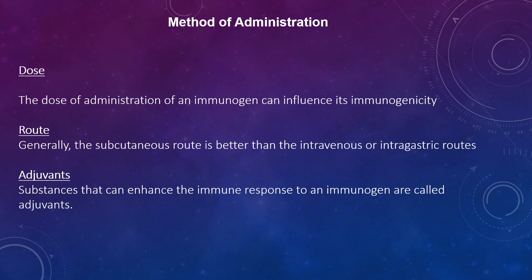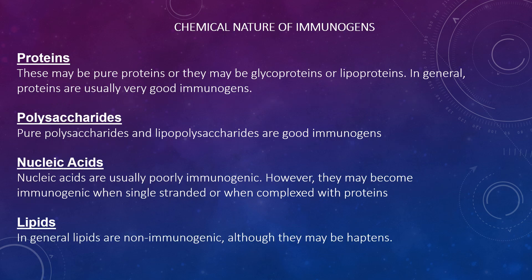For the route, the subcutaneous route is better than the intravenous or intragastric route. The route of antigen administration can also alter the actual response. For adjuvants, substances that can enhance the immune response to an immunogen are called adjuvants. However, the use of adjuvants is often hampered by undesirable side effects such as fever and inflammation.